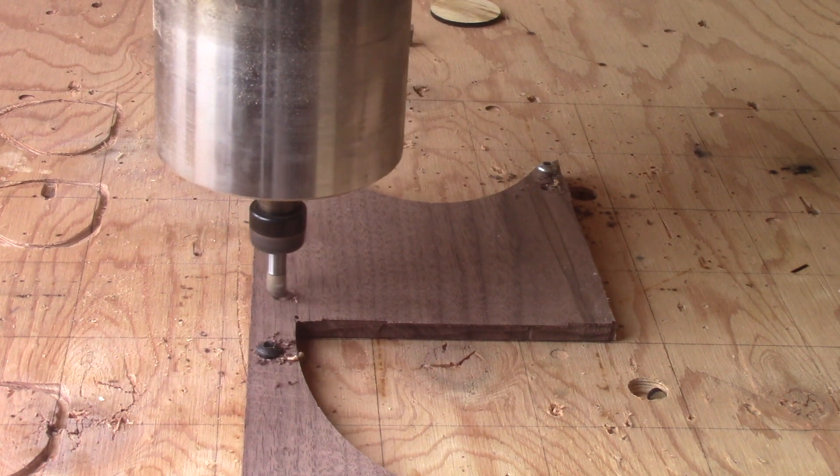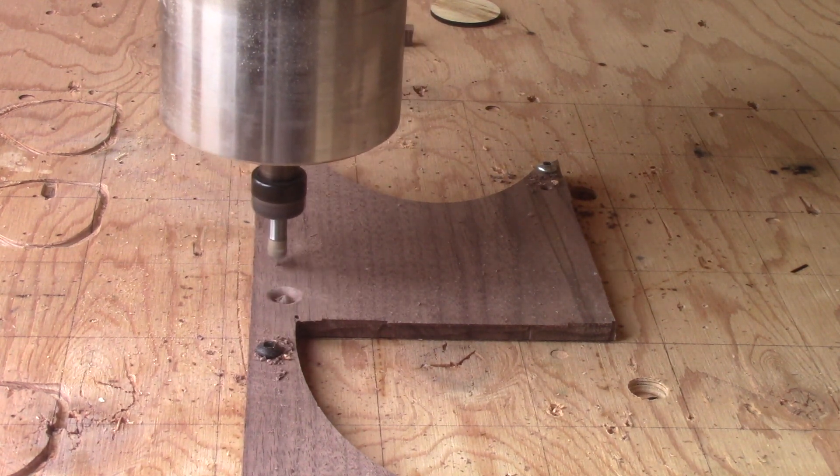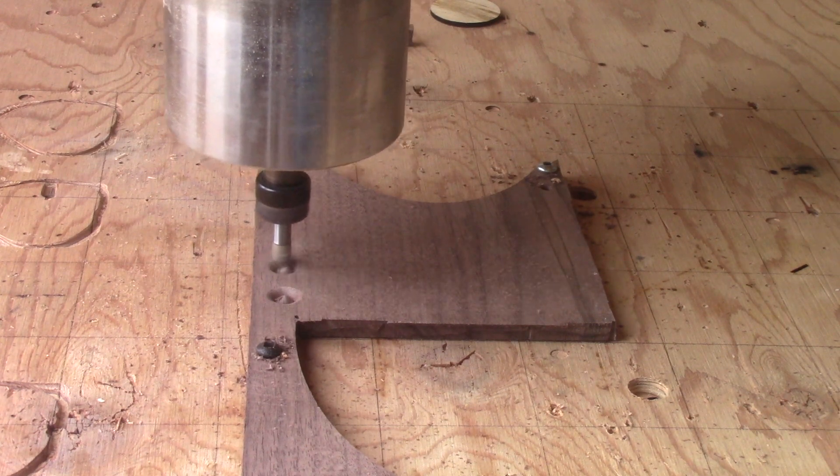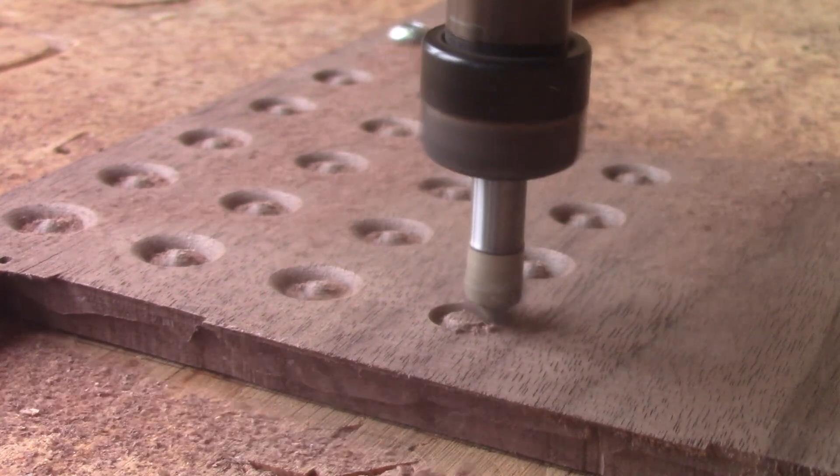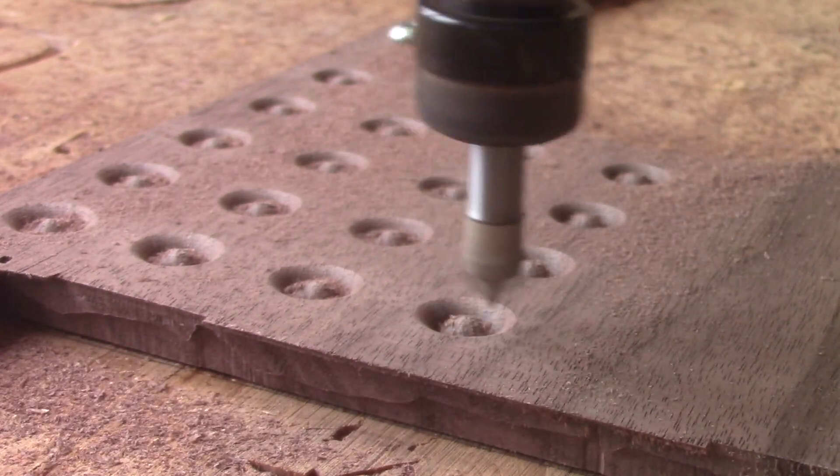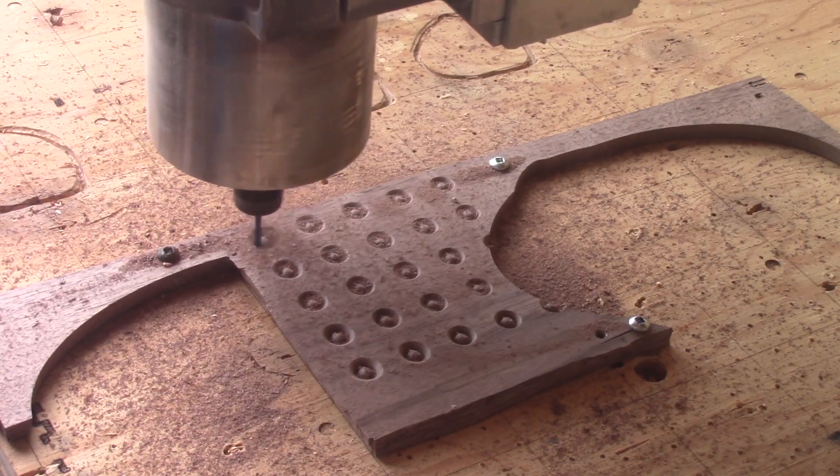They're cut from a piece of walnut. The first cut is done with a quarter round bit. Then, I switch the bit and finish the buttons.